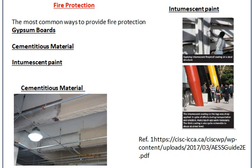Cementitious materials are sprayed over the steel members. There are three checks which should be carried out to verify the material is in good condition: the first test is adhesion of the cementitious material to the steel member; the second test is the thickness of the material; and the third test is the density of the material, which verifies that the components were mixed correctly and gave the right density as per the manufacturer.